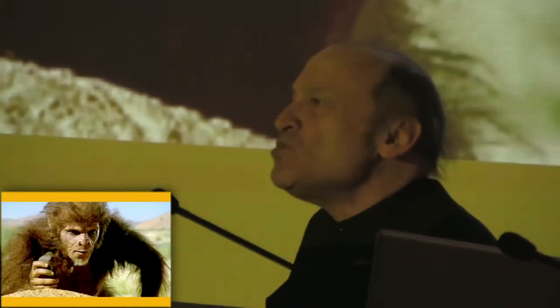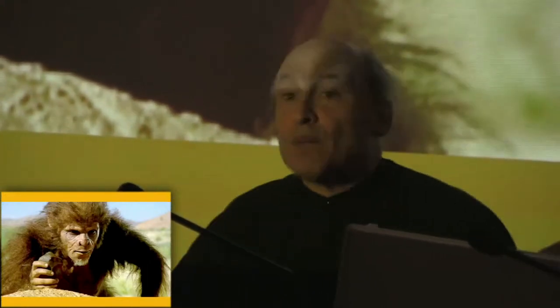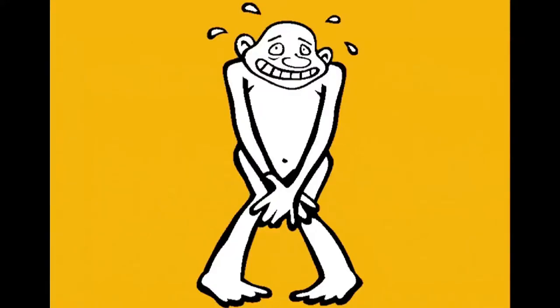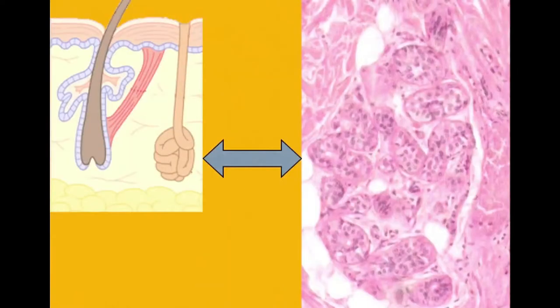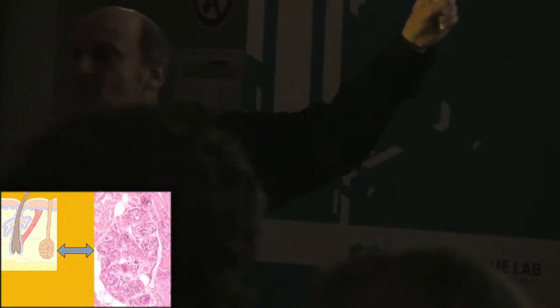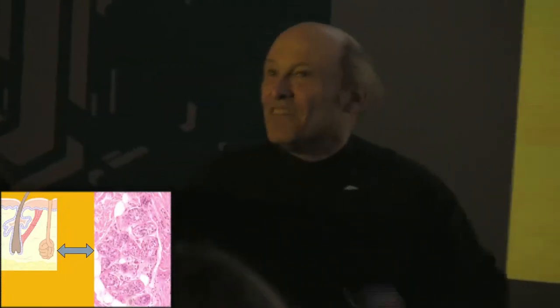Well, then come two other evolutionary developments that were absolutely crucial to the success of the human race. The first was nakedness. And the second was the eccrine gland. This thing right here, there's a micrograph of it. This makes you sweat. We have lots and lots of them. Very few animals have anywhere near as many eccrine glands as we do. Because it would be useless if you got a covering of fur. But if you're naked,